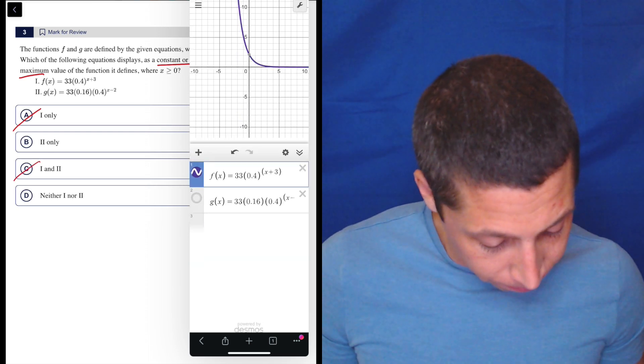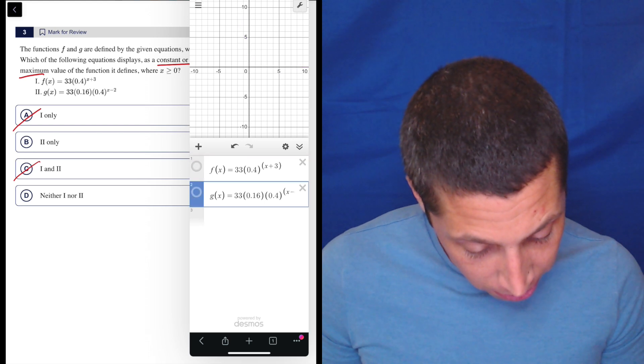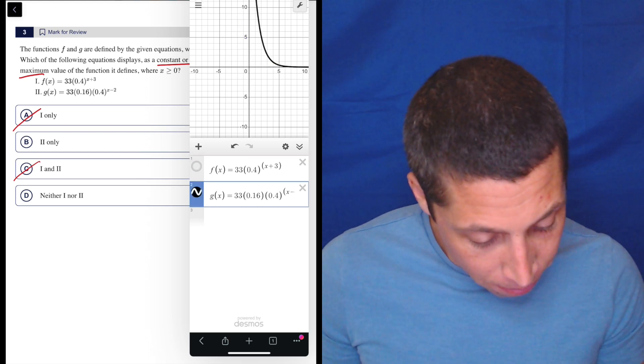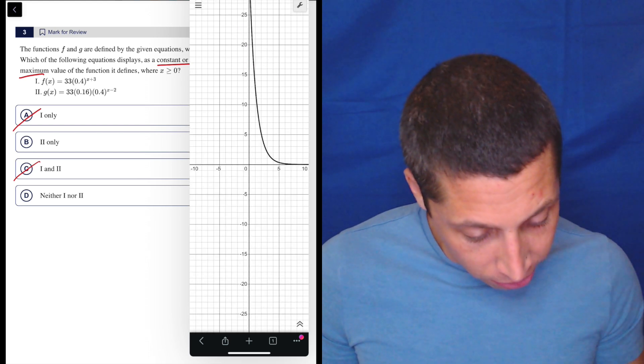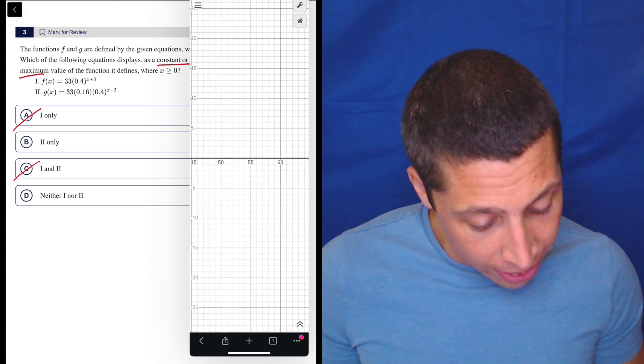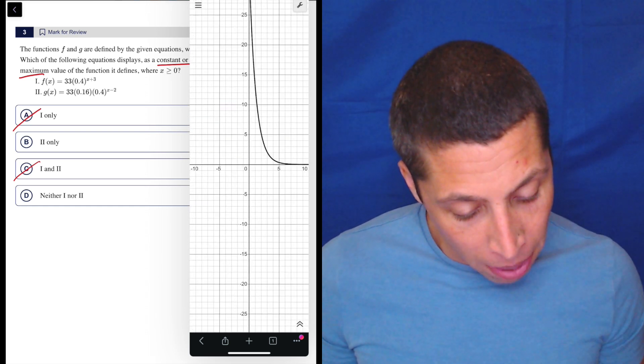So let's look at the other one. So this would be this one here. And same thing. It looks like if I go to the right, it's kind of dead. But my maximum, again, because x has to be greater than or equal to 0,